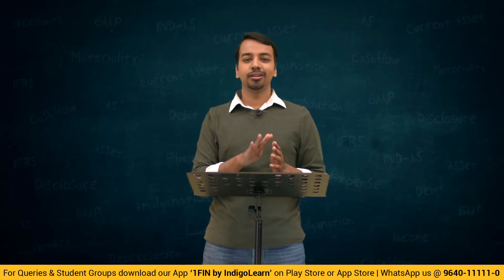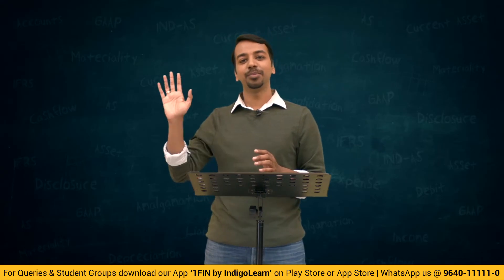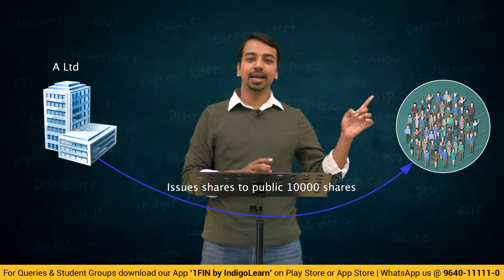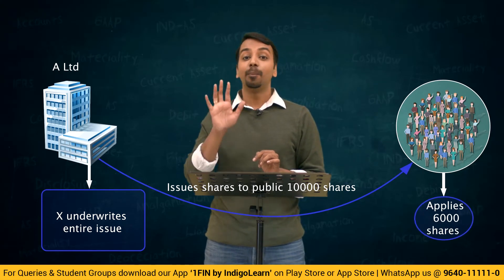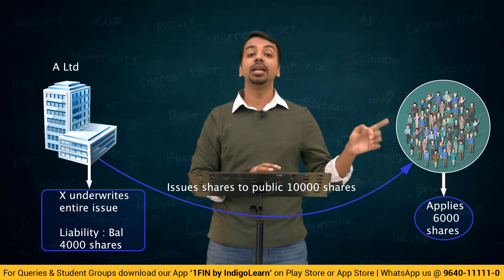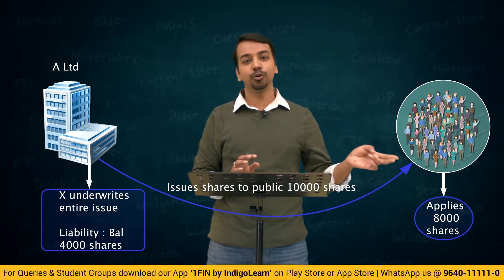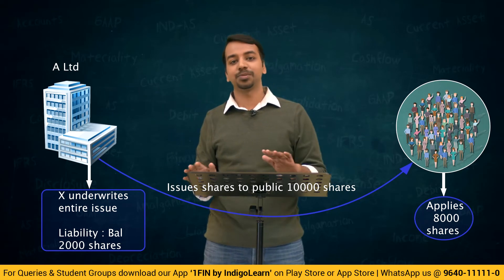Let us look at examples. Take a company that has issued 10,000 shares to the general public, and the underwriter has underwritten all 10,000 shares. If the public applies for 6,000 shares, the balance 4,000 — the underwriter's liability — will be subscribed by the underwriter. If the company gets 8,000 applications, the underwriter subscribes to 2,000. If the company gets 10,000 or more applications, the underwriter has no liability at all.